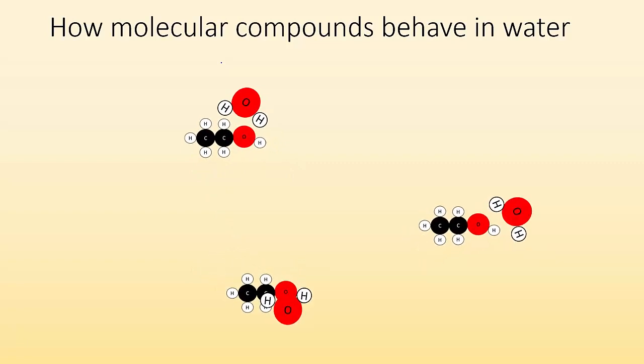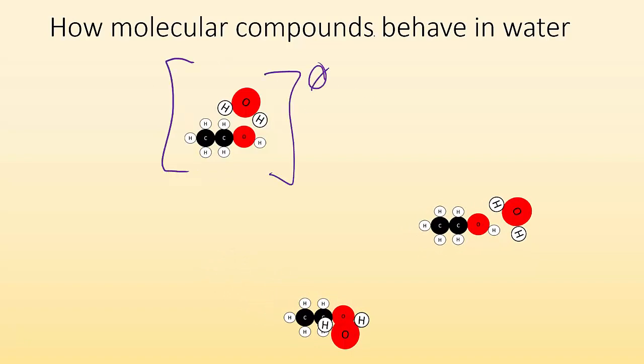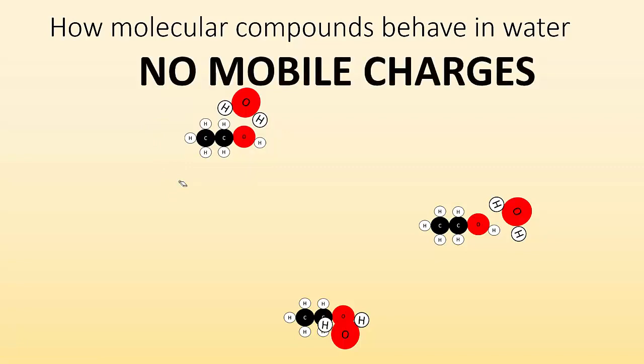The big difference here is that there are no mobile charges. This whole thing right here is neutral. It's still a charge of zero. So it's not charges. The particles become mobile, but they don't have a charge with them. So it's not going to conduct electricity because we have no mobile charges.